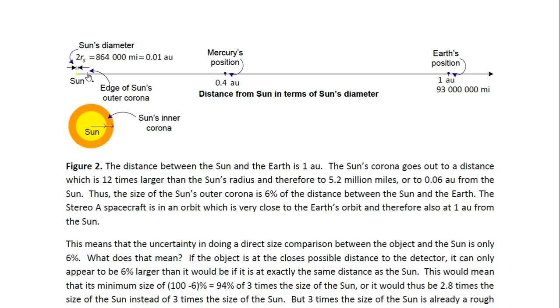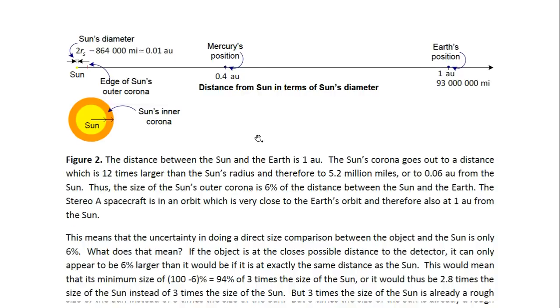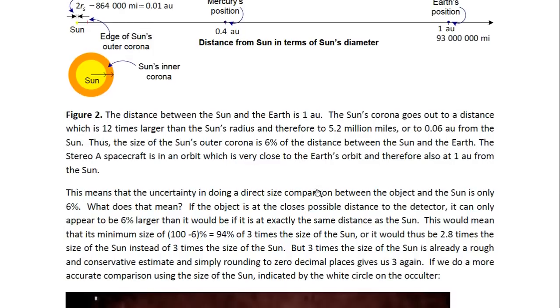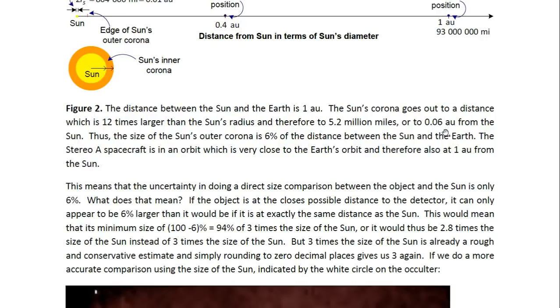And here what is indicated is the outer edge of the Sun's outer corona, indicated by this red line here. The Sun's inner corona is indicated here, but we're not using it in this article. So the Sun's outer corona, the radius or the distance between the Sun and its outer edge is about 12 times the radius of the Sun. So that's 5.2 million miles, which is about 0.06 AU from the Sun. Now 0.06 AU is 6% of the total distance between the Sun and the Earth. And the STEREO spacecraft is in an orbit which is very close to the Earth's orbit, so it's therefore 1 AU from the Sun as well. So the fact that it's 0.06 AU means we have a 6% uncertainty in a direct size comparison between the object and the Sun.